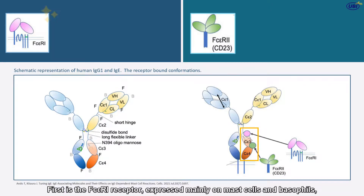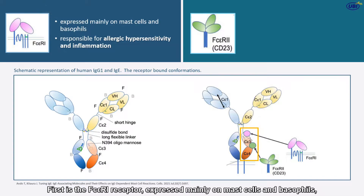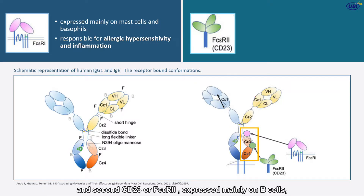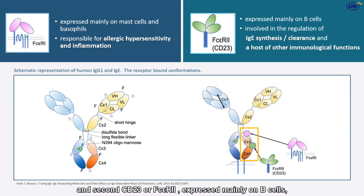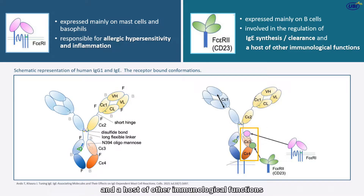First is FC-Epsilon-Receptor-1, expressed mainly on mast cells and basophils, responsible for allergic hypersensitivity and inflammation. Second, CD-23 or FC-Epsilon-2, expressed mainly on B cells, involved in the regulation of IgE synthesis, IgE clearance, and a host of other immunological functions.